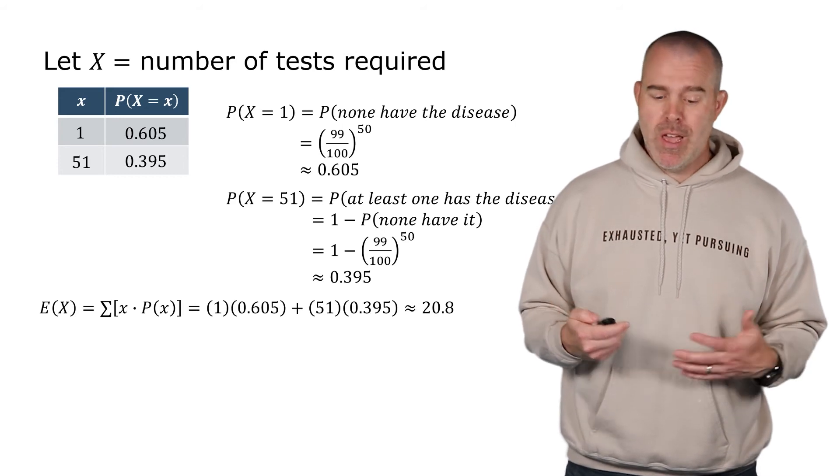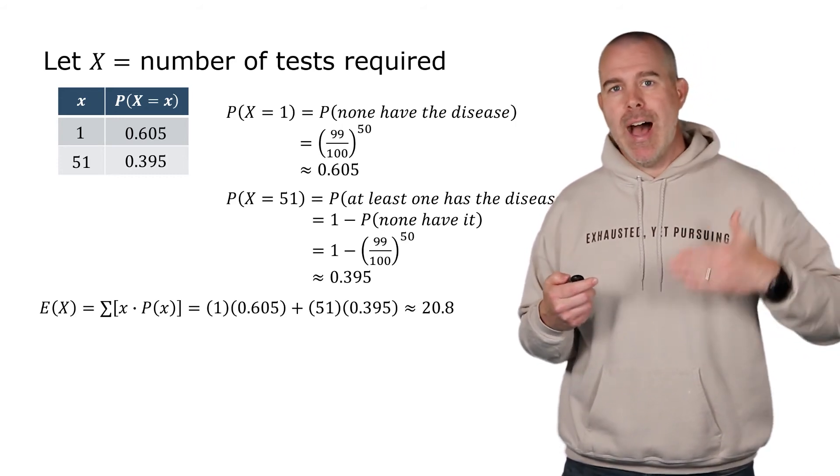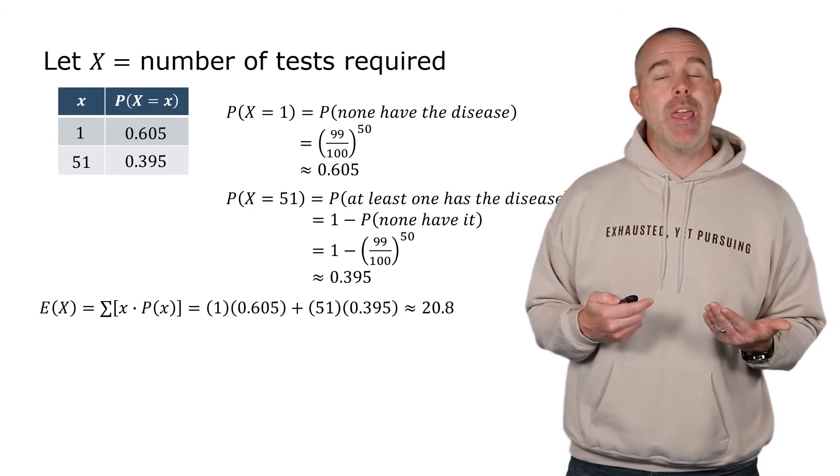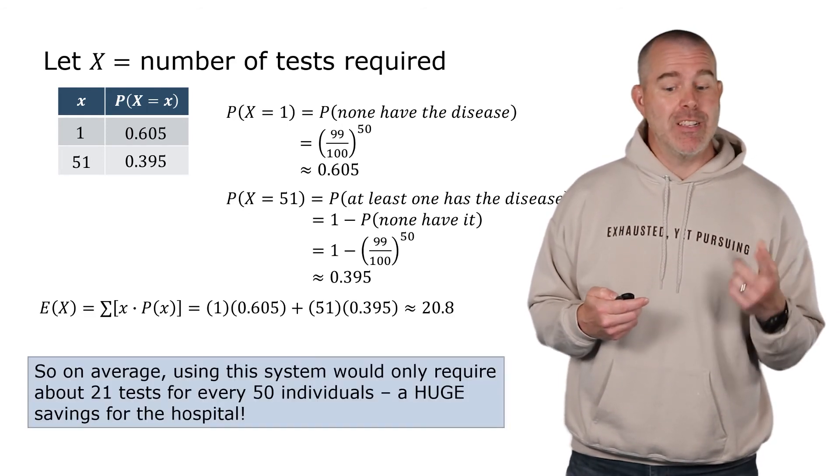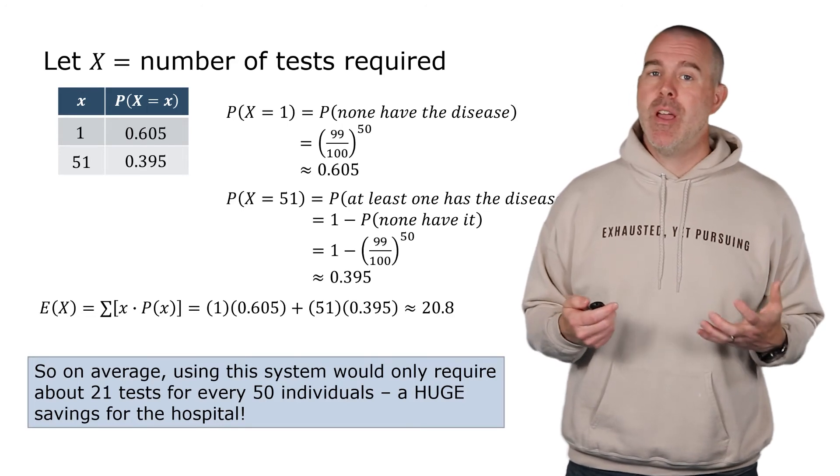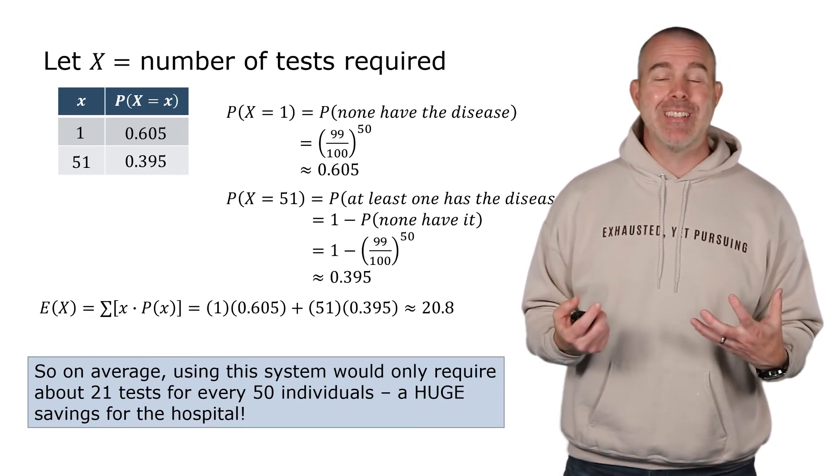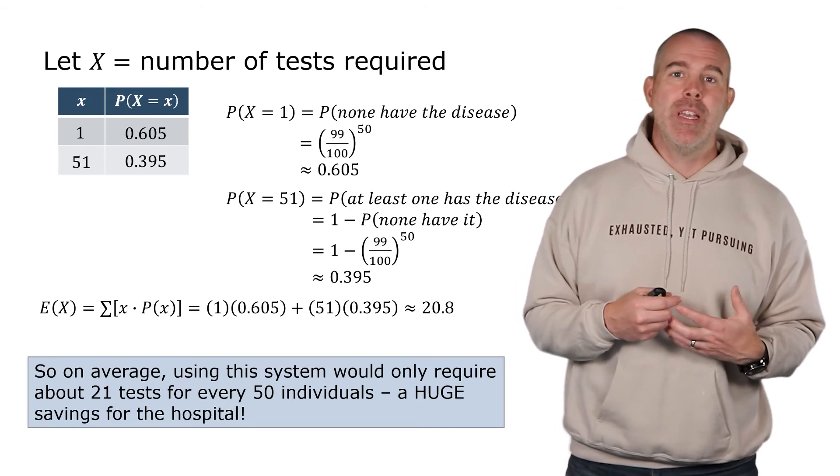Okay, so the expected value, you multiply the outcomes, either one or 51, times their corresponding probability. We get about 20.8. Ah, so on average, using this new system, you'd only use about 21 tests, which is a lot less than 50, testing them all individually.